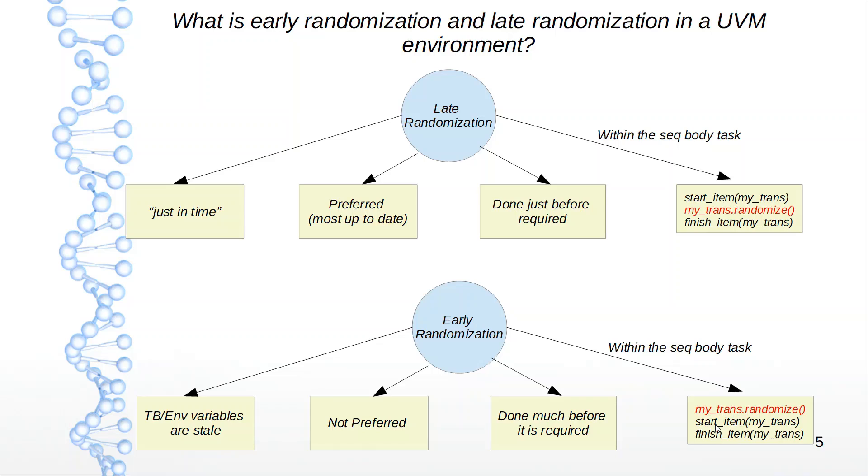That is why, as the name suggests, early randomization is too early and should not typically be used. Late randomization, or just-in-time randomization, should be the way to go.